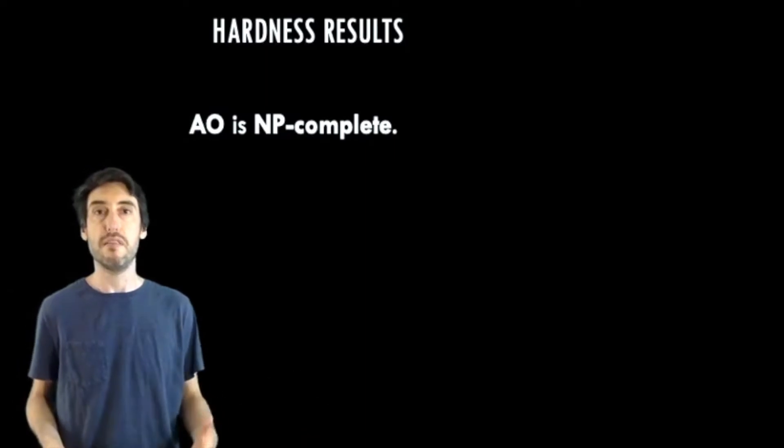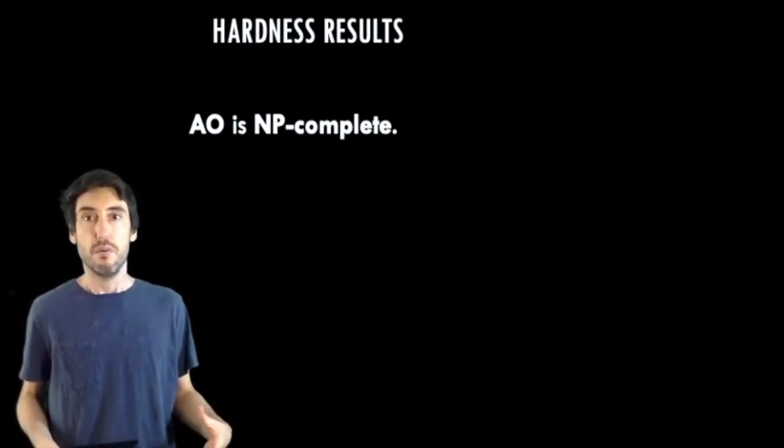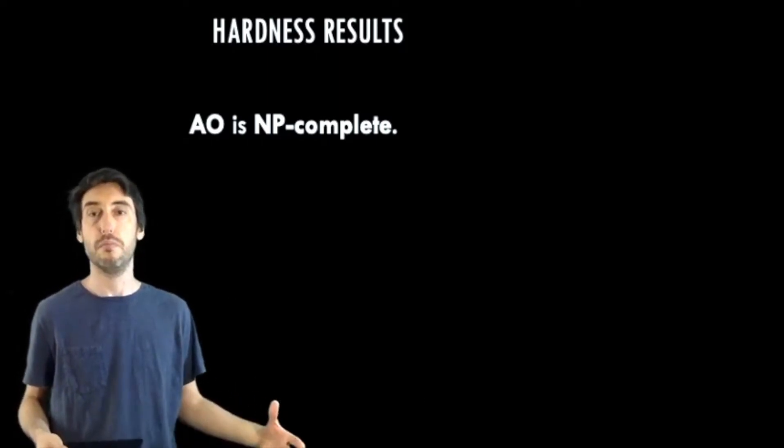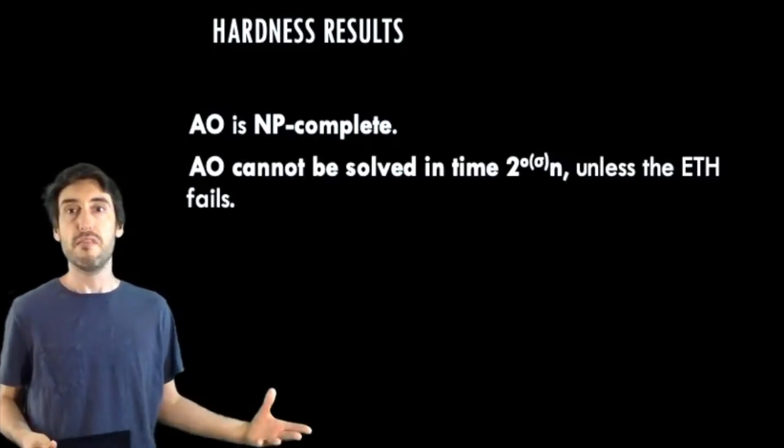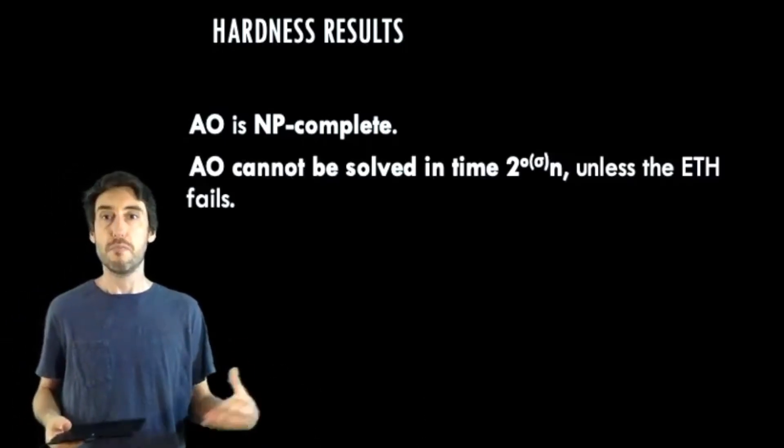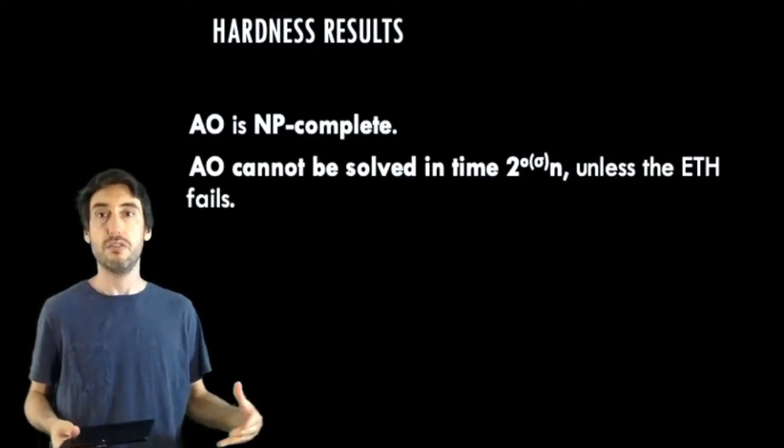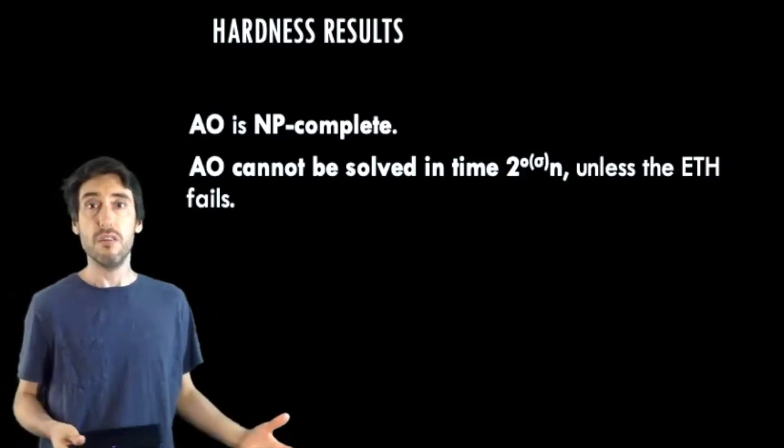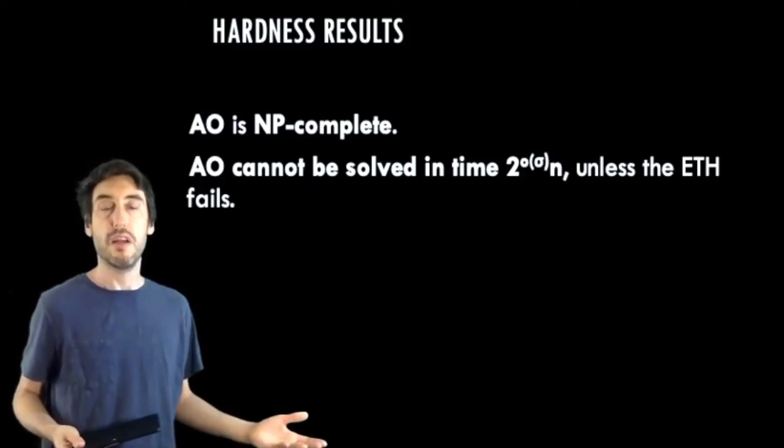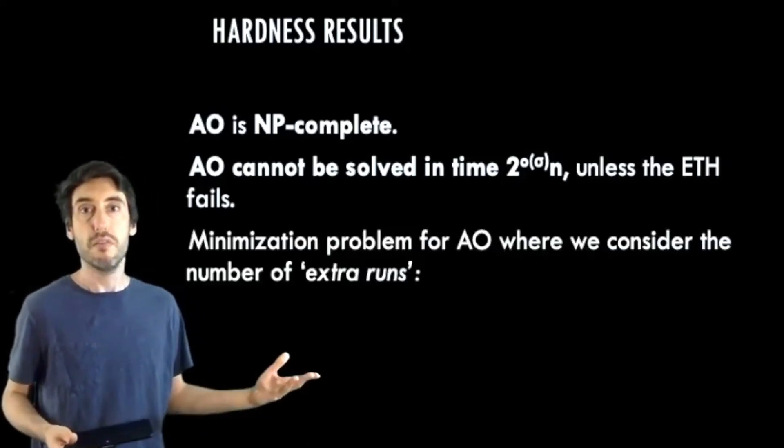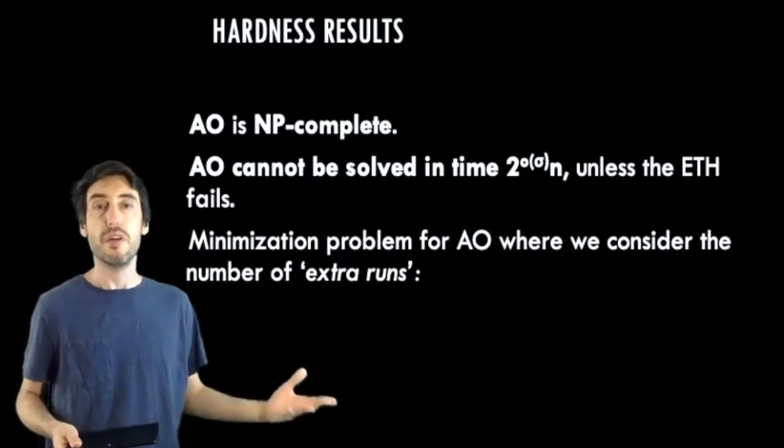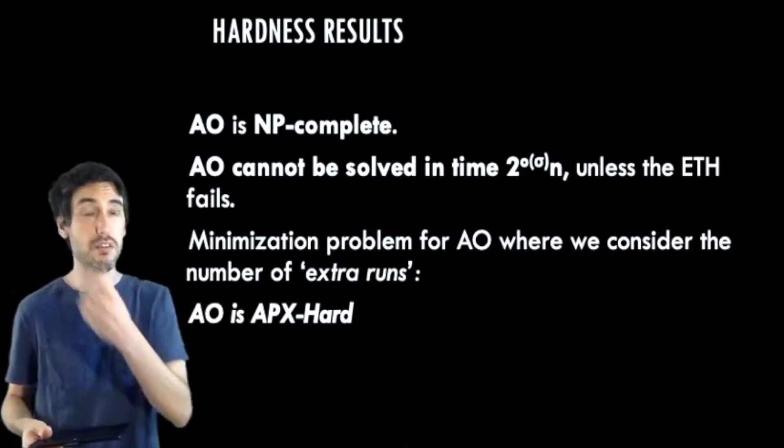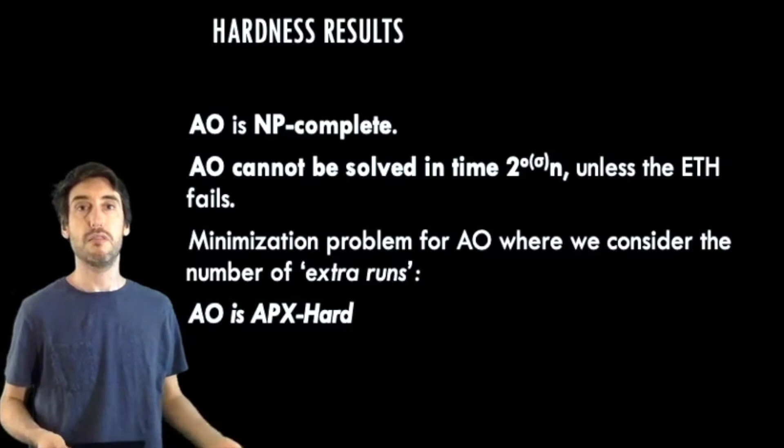So what can we prove about this problem? Well, first, this problem is NP complete. So it's hard, but what about exact algorithms? How small can we make the exponent in an exponential time algorithm for this problem? Well, we can place some limits on that as well. Based on the exponential time hypothesis, or ETH, we can't do this in time 2 to the little o sigma times n. So okay, it's hard to solve exactly, but what about approximating an optimal solution? So considering now the minimization problem we described earlier, we can also show that this problem is APX hard. Now this last fact implies it's unlikely that there exists a polynomial time approximation scheme for this problem.